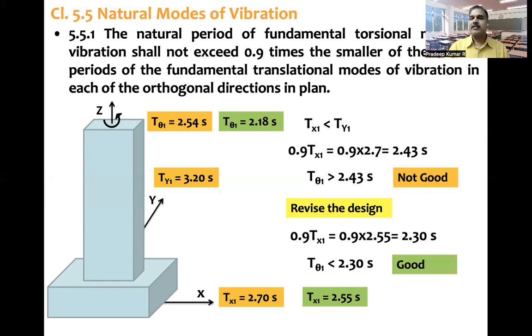So what the code says is torsional mode of vibration shall not exceed 0.9 times the smallest or smaller of the fundamental natural period in two orthogonal directions. So this is an example.